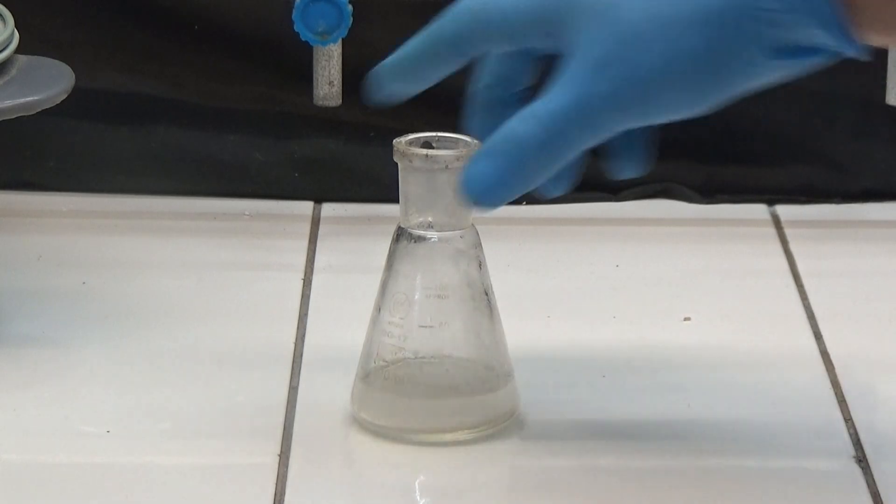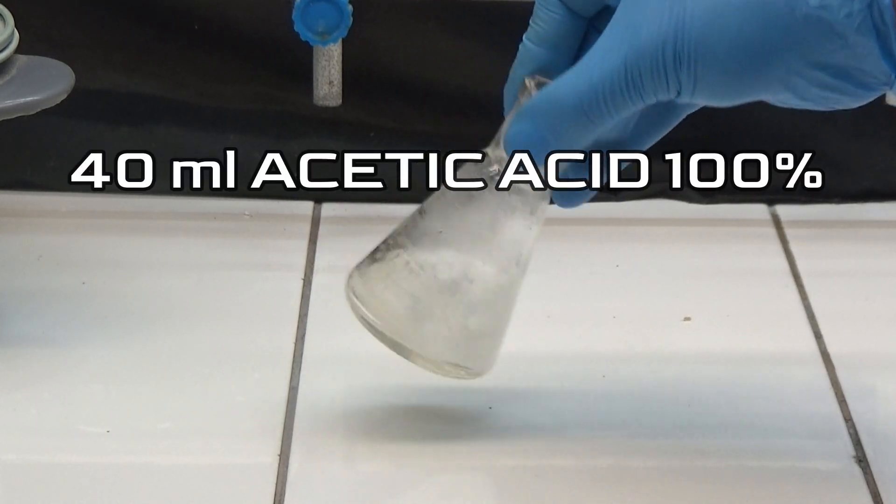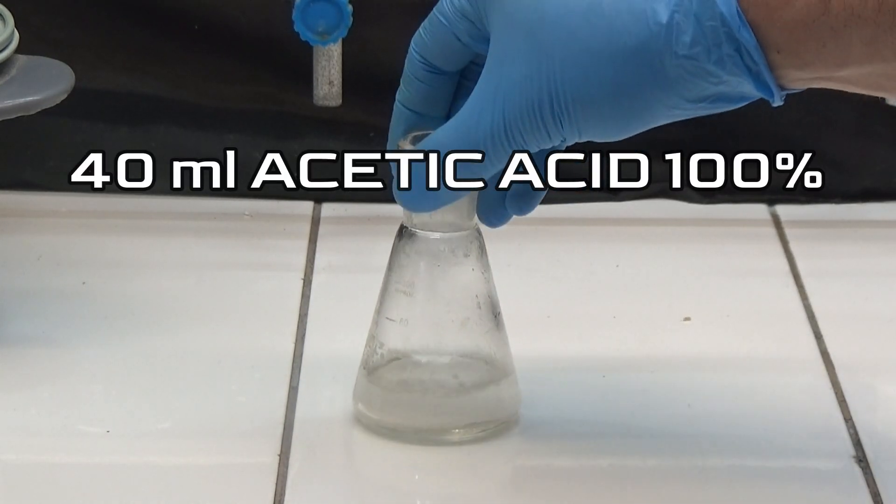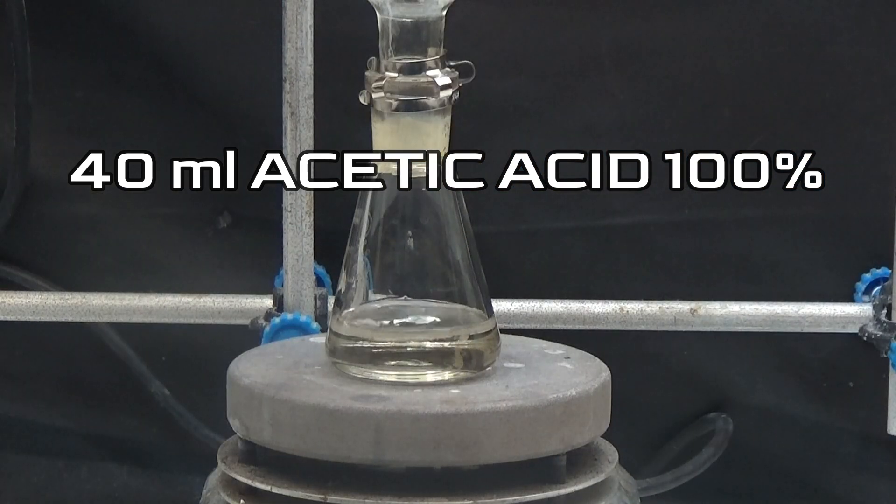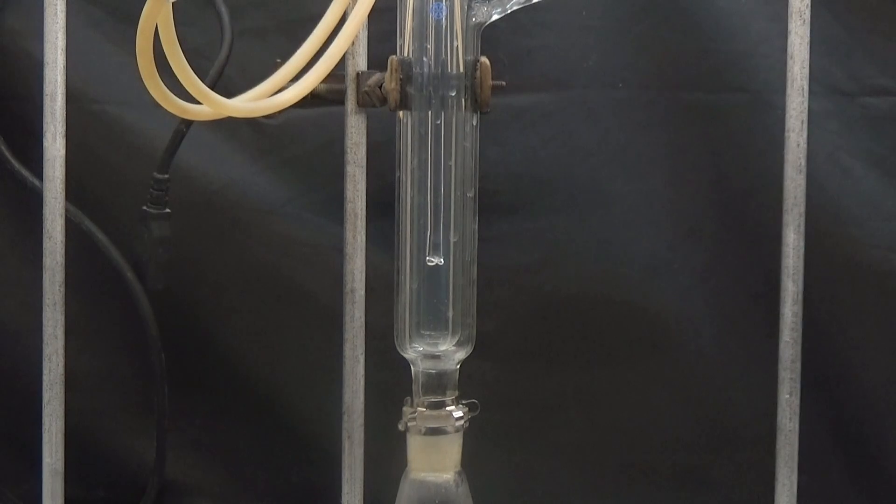To purify the obtained anhydride, we recrystallize it with 100% acetic acid. We put 40 milliliters of 100% acetic acid in the flask and heat it to reflux until the solid is completely diluted.